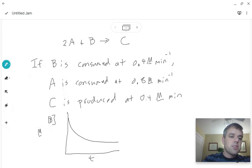If we're looking at the concentration of A, its concentration is going to drop twice as fast. And if we look at C, its concentration is going to start appearing or being produced.